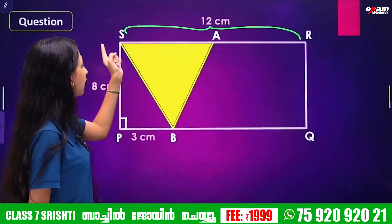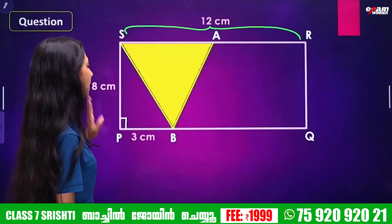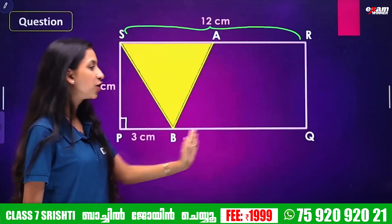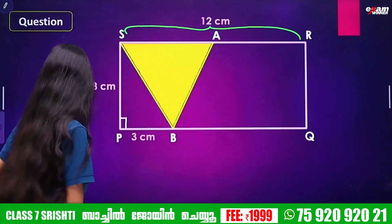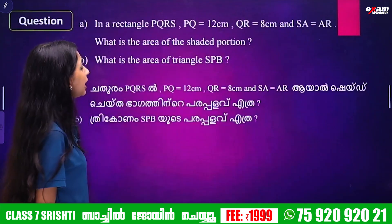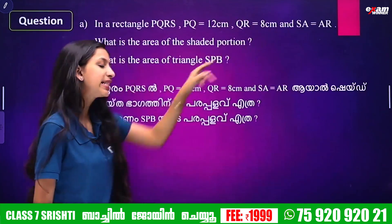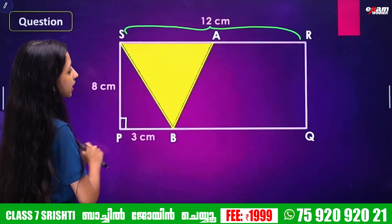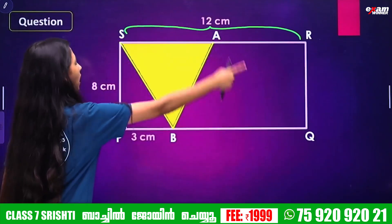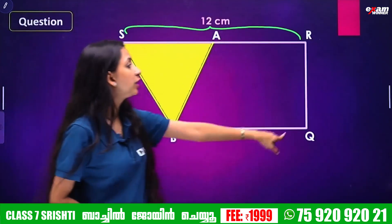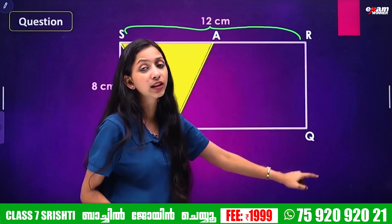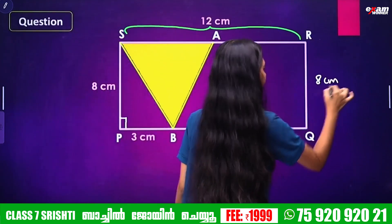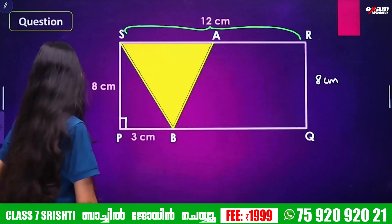QR is equal to 8 cm. So QR, which is also PS, equals 8 cm. SR equals PQ, so SR is also 12 cm.